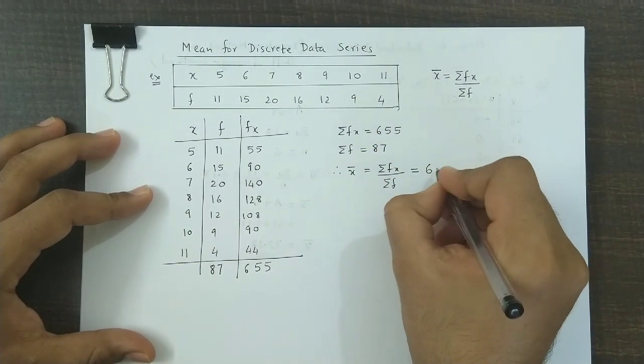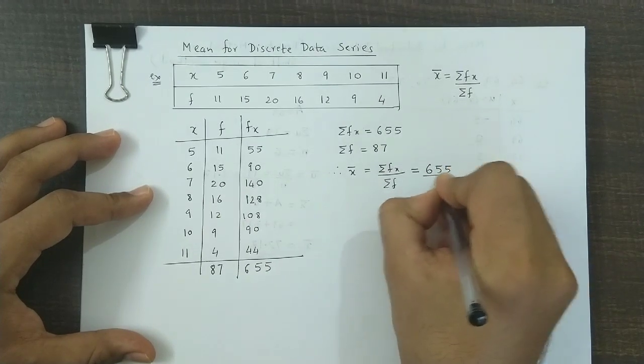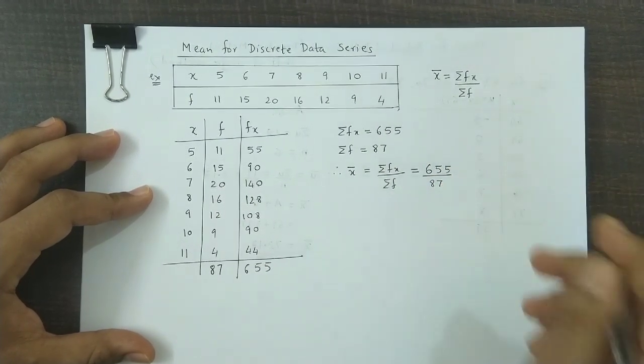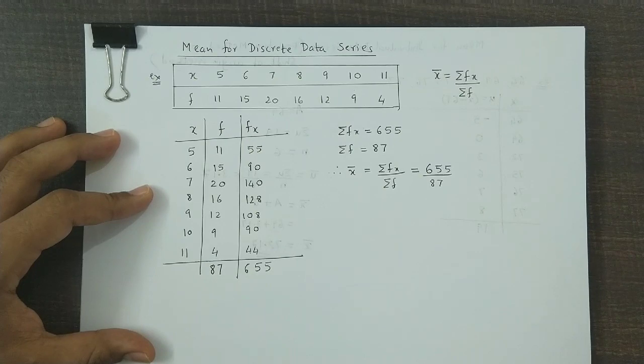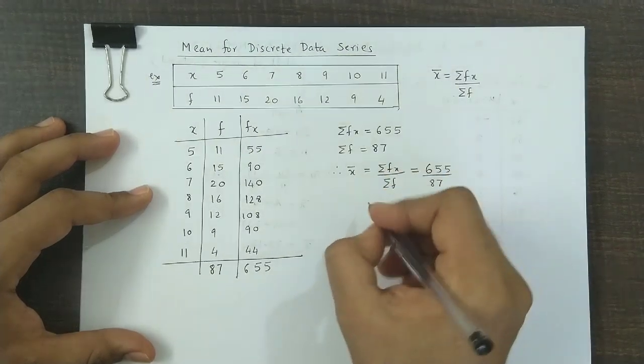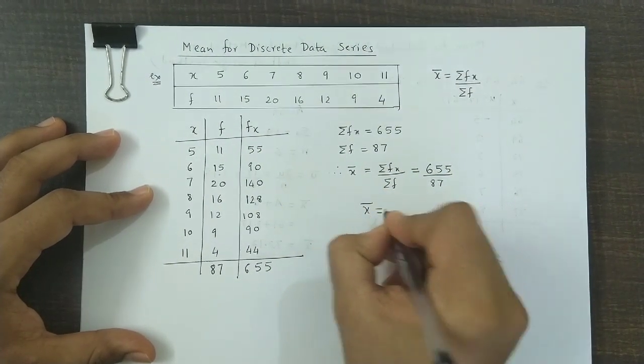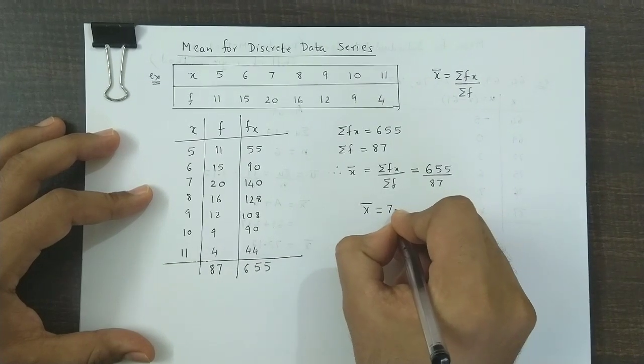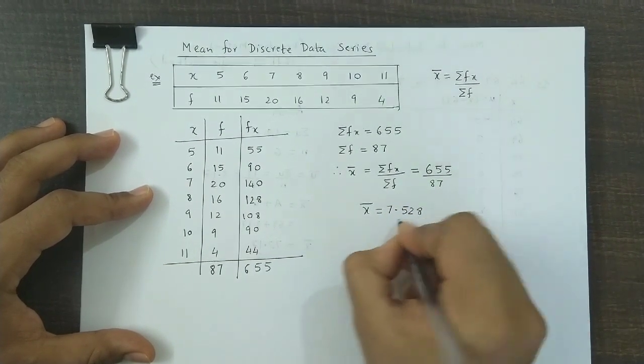We divide these two values. 655 divided by 87. We get the mean value, that is x̄ = 7.528.